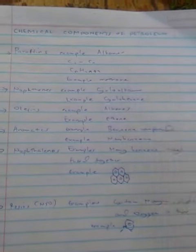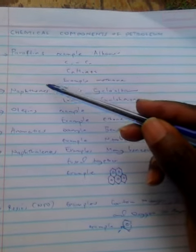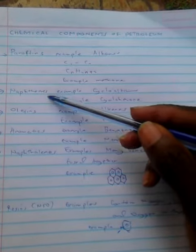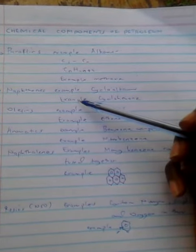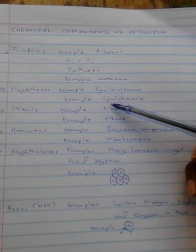An example of a paraffin is methane. Naphthenes are basically cycloalkanes — an example is cyclohexane.